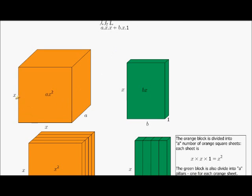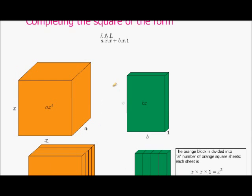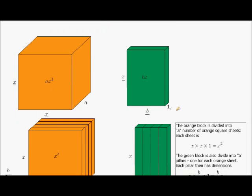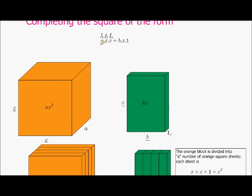Here we can see our height, breadth, and length a. We can do the same for the second part — length times breadth times height. There we have our length, height, and width — depending on which way you're looking at it. And then this expression represents the volume of each of these.